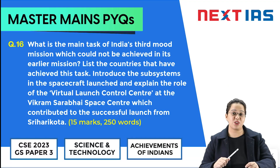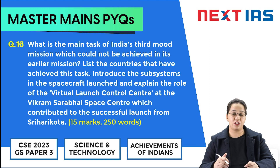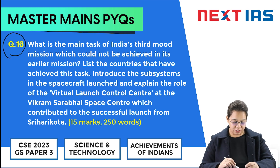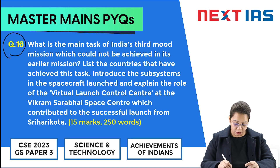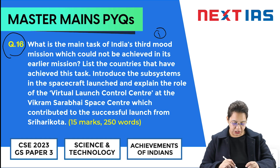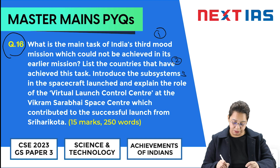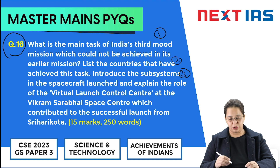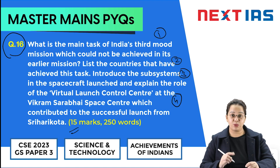Hello everyone, welcome to yet another session of Master Mains PYQ by Next IES. Today we will be discussing a question of Science and Technology from GS Paper 3 of CSE 2023 Mains examination. The question is number 16: What is the main task of India's third moon mission which could not be achieved in its earlier missions? List the countries that have achieved this task. Introduce the subsystems in the spacecraft launched, and explain the role of the Virtual Launch Control Center at the Vikram Sarabhai Space Center which contributed to the successful launch from Sriharikota. This is a 15-marker and you need to write it in 250 words.